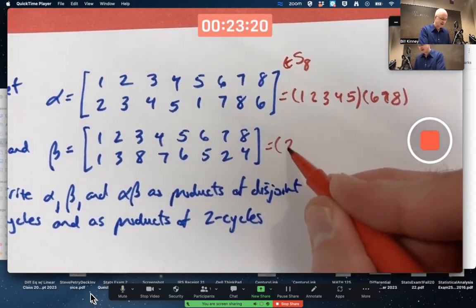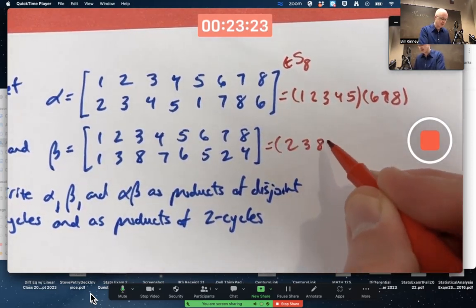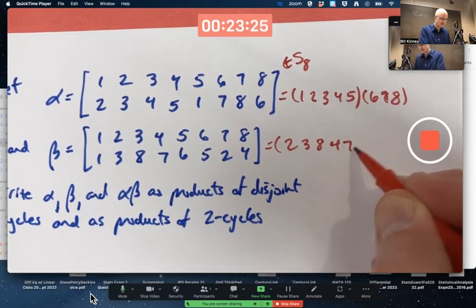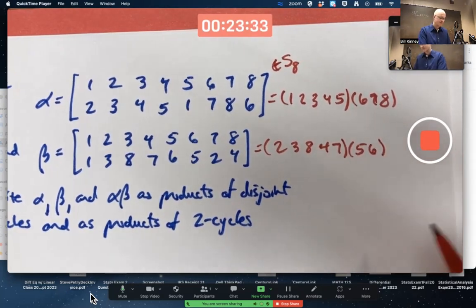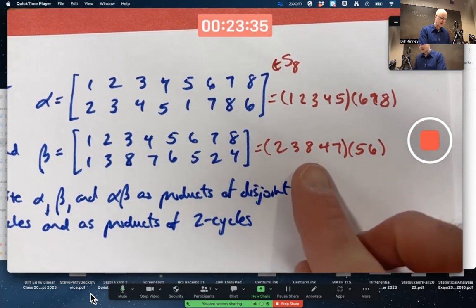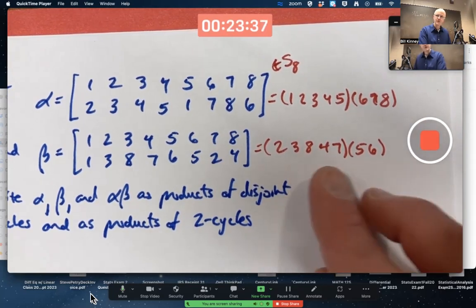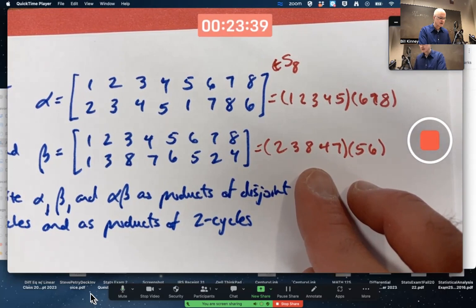With beta, 2 gets mapped to 3, which gets mapped to 8, which gets mapped to 4, then 7, then back to 2, and 5 and 6 get permuted back and forth. That's a product of a 5 cycle and 2 cycle. These are your disjoint cycles here. And therefore, its order would be the LCM of 5 and 2, which is 10.